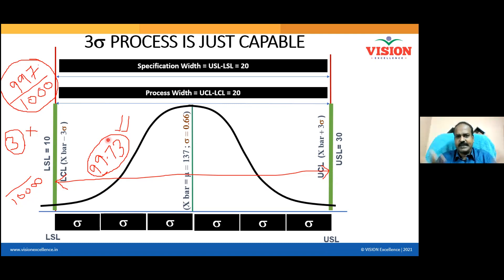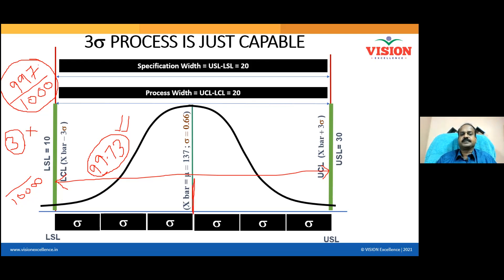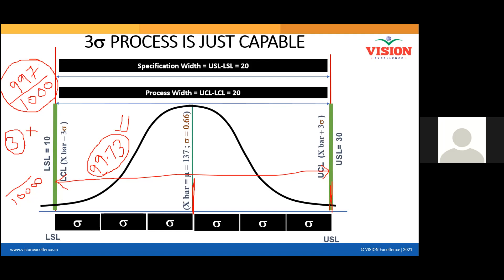Process deterioration will definitely happen because you can't expect the same thing over the long term — there will be variation in any business. This process can now be called 'just capable' because my control limit overlaps with the specification limit, which is why the success rate is 99.73%. Statistically, this process is called a three sigma process — the distance between the process center and the nearest specification limit is three sigma.